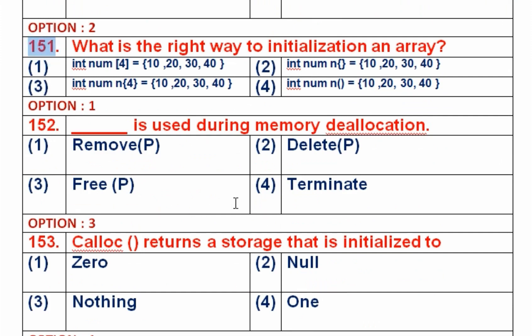Question number 151: What is the correct way to initialize an array? Initialization is the process of assigning a value to a variable or array, which can be done at the time of creation or after declaration. The syntax is: data type, followed by the name of the variable or array, followed by the size, then an equals sign, then a pair of curly braces with values separated by commas, then a semicolon. Option 1 follows this syntax and is the right answer.